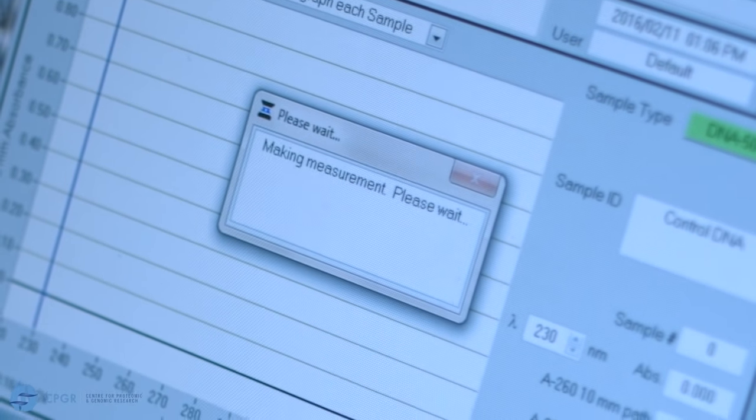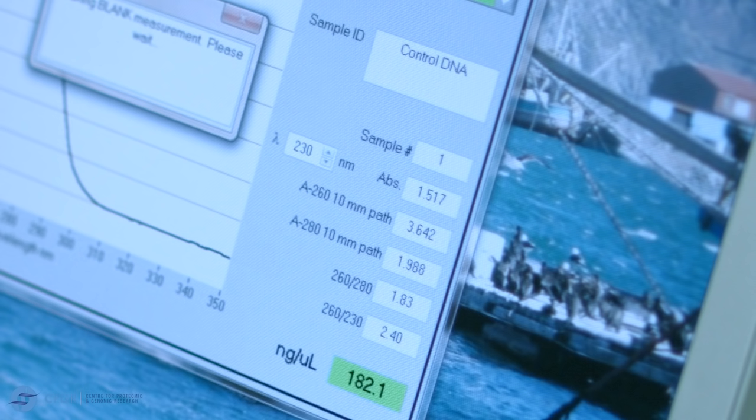In assessing the DNA, while the concentration and the 260 to 280 ratios are important, it is also critical that the 260 to 230 ratios are good. The 260 to 230 ratios should be between 1.5 and 3.